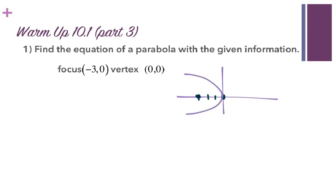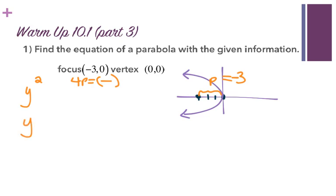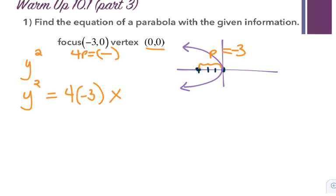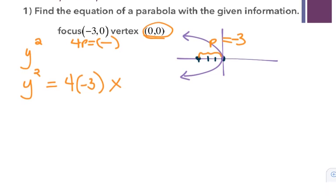This means my parabola points left, and from here I can determine that p is 3. So if it points left, I know that it is a y-squared function, and the 4p is also going to be negative. So this would be negative 3. I get y squared equals 4 times negative 3 times x, because the x-coordinate of my vertex is also 0, giving y squared equals negative 12x.